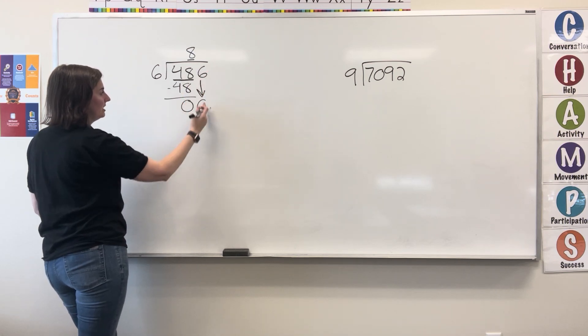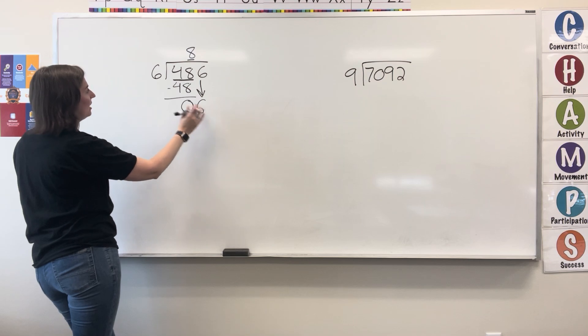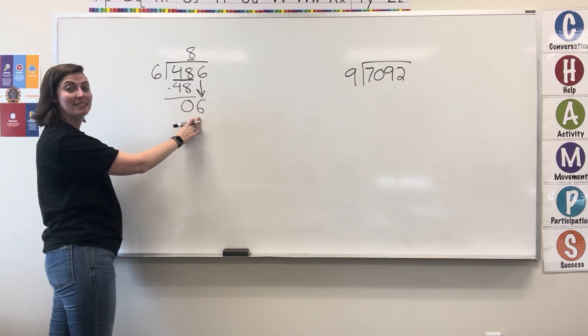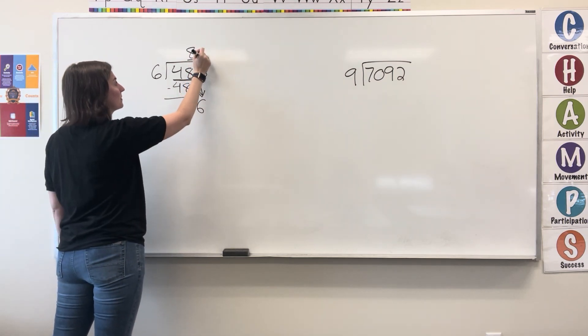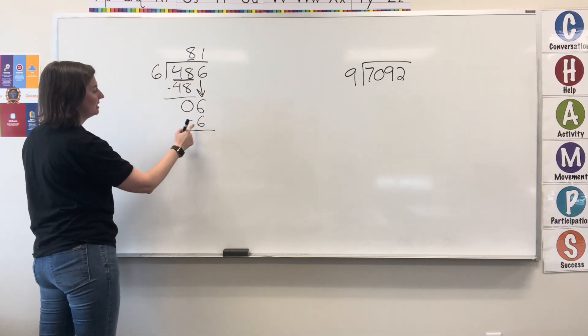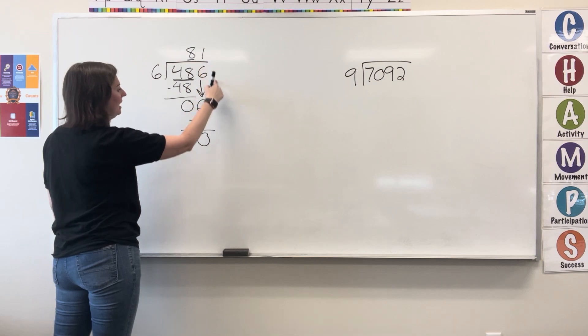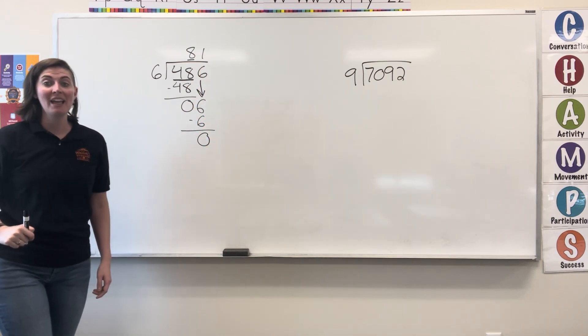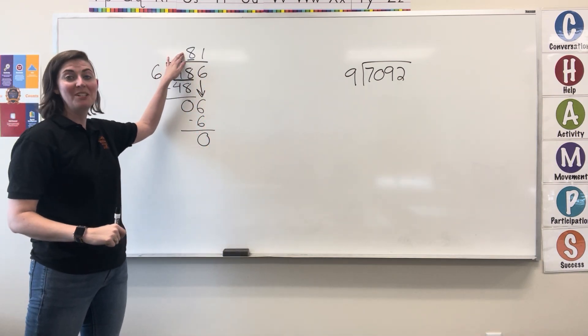Bring down a digit. So now I have 6 coming down. 6 goes into 6 one time. 1 times 6 is 6. I subtract. 6 minus 6 is 0. I have no other digits to bring down. That means I've reached my quotient, which is 81.